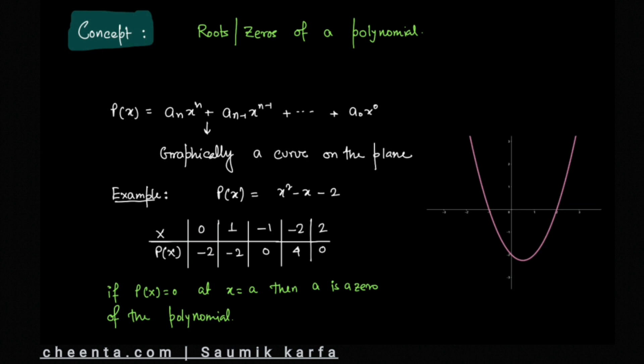If we plot these points on the graph and draw a rough sketch, it will look like this particular curve where we can see the outputs are 0 at points -1 and +2. Those values of x which make the output 0 are called roots or zeros of that polynomial. We can notice that at the zeros or roots of the polynomial, the curve intersects the x-axis. That is the significance of a zero or root of a polynomial.